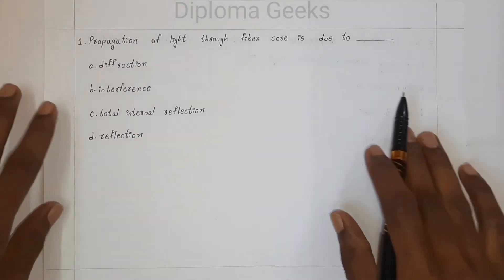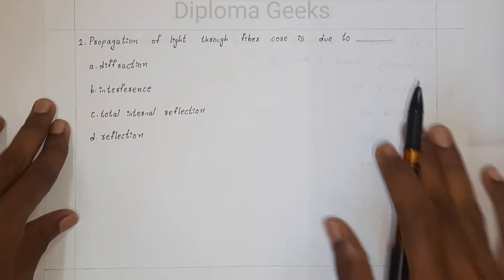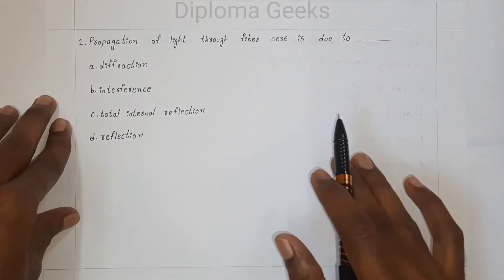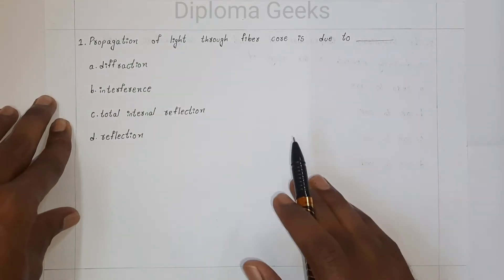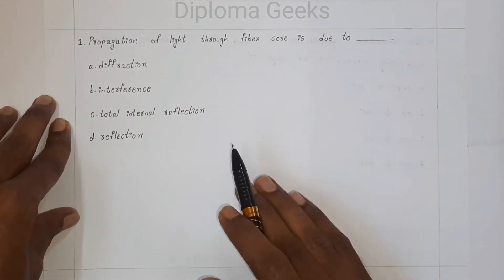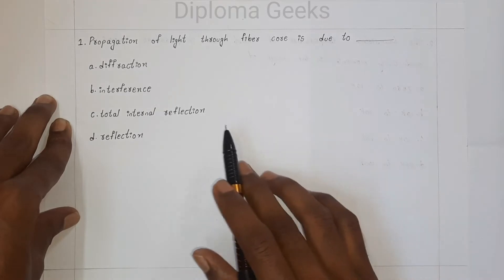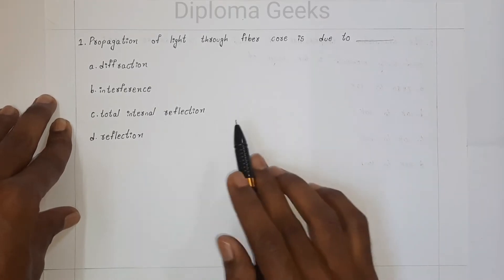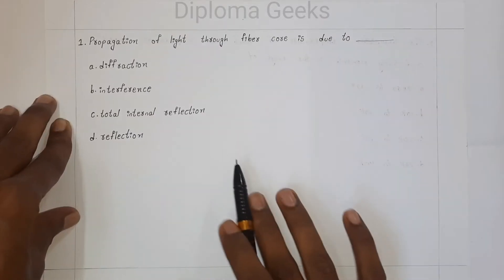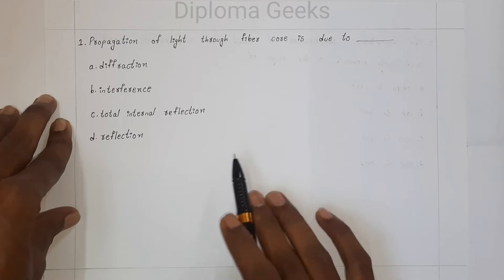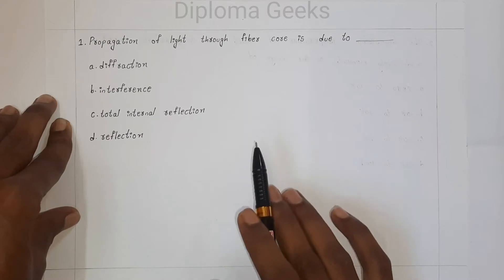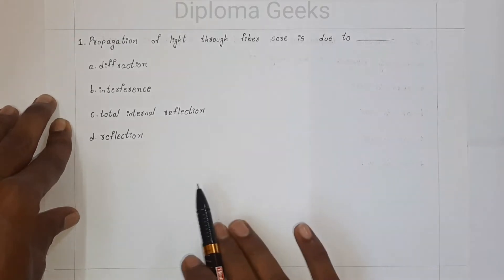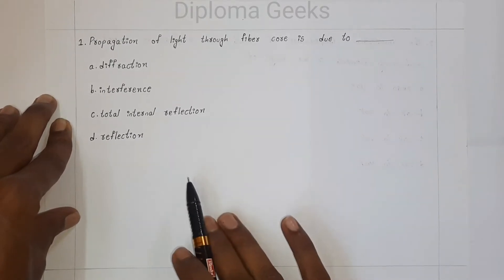Our first question from Modern Physics: the propagation of light through fiber core is due to — option A: diffraction, option B: interference, option C: total internal reflection, and option D: reflection.